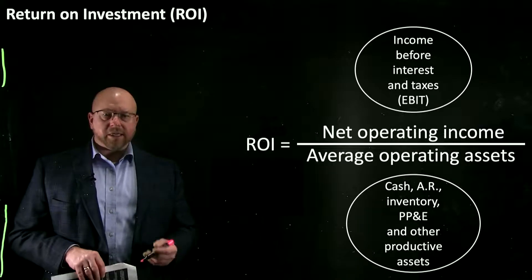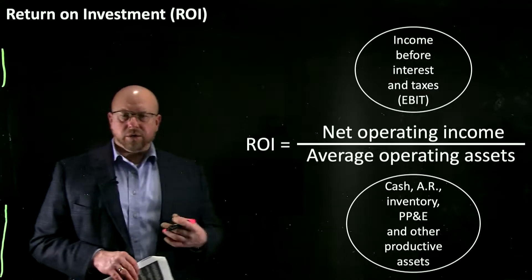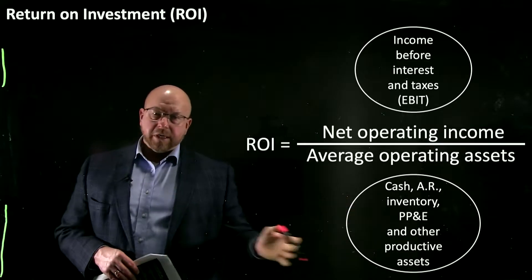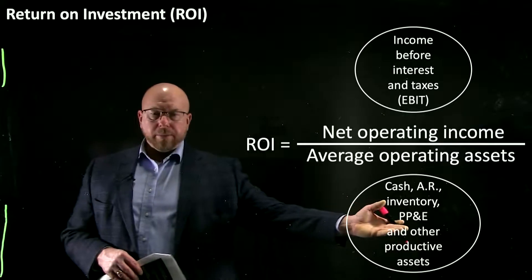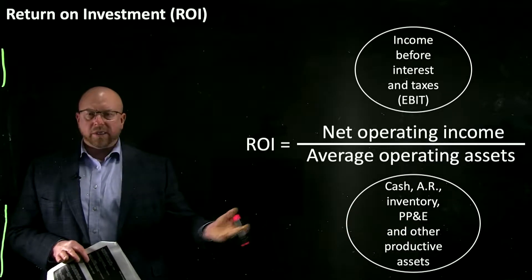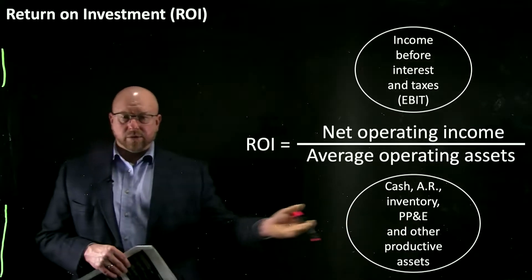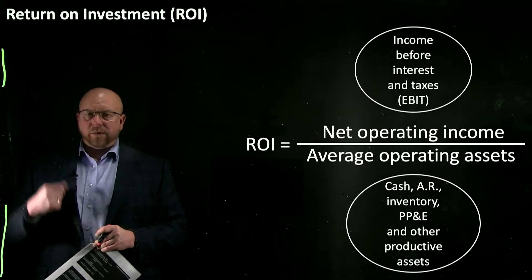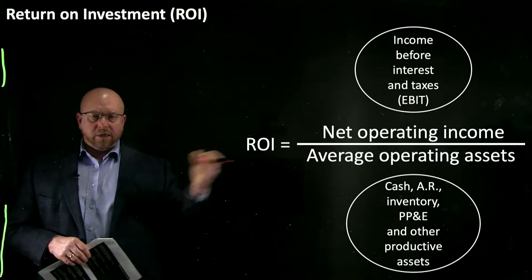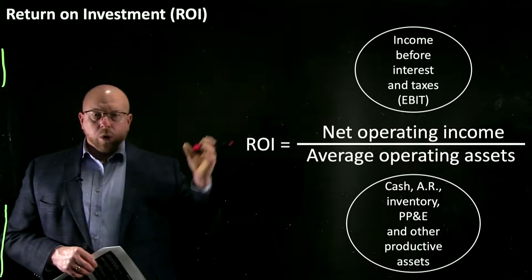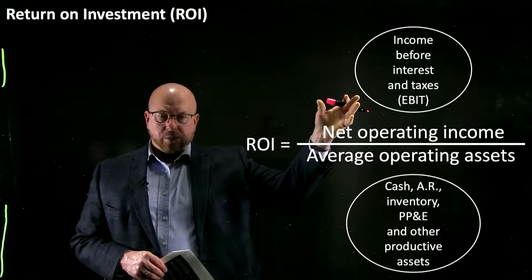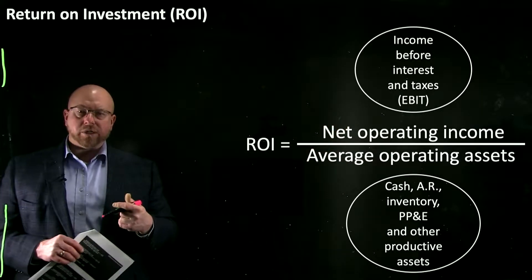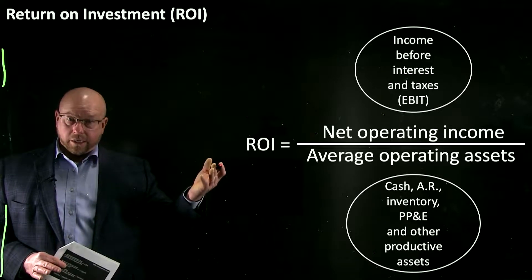Those average operating assets are the productive assets you use to run your business: things like cash, accounts receivable, inventory, property, plant, and equipment — which is just a fancy term for fixed assets — so buildings, equipment, and other productive assets. What this formula is basically showing is what income we're generating relative to our investment in the infrastructure required to generate that income.